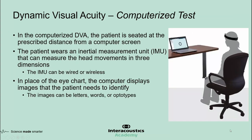In the computerized DVA test, the patient is seated at a prescribed distance from a computer screen. The patient wears an inertial measurement unit, or IMU, that can measure head movements in three dimensions. The older IMUs were wired, but newer versions are wireless, which is preferable because it doesn't restrict head movements. In place of the eye chart, the computer displays images the patient needs to identify. The images can be letters, words, or most commonly optotypes. Typical optotypes include tumbling E's or Landolt C's.